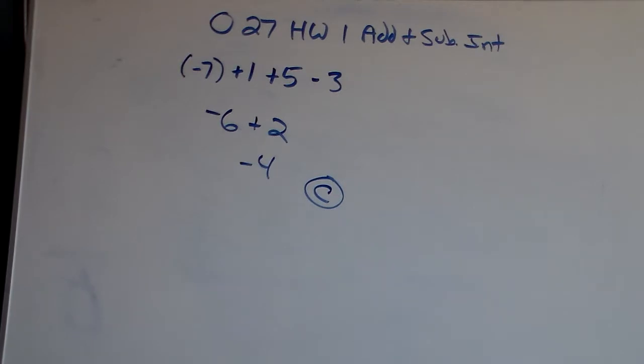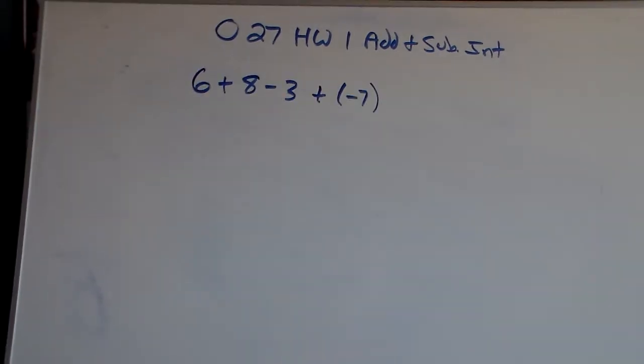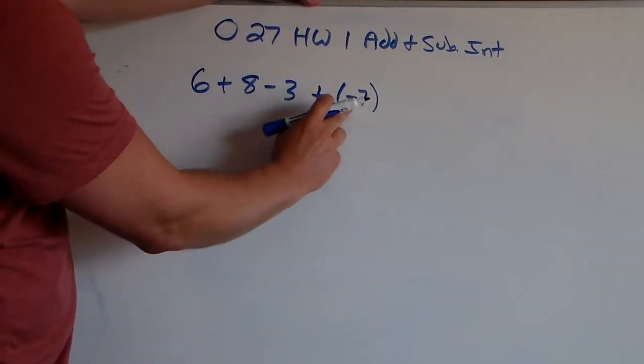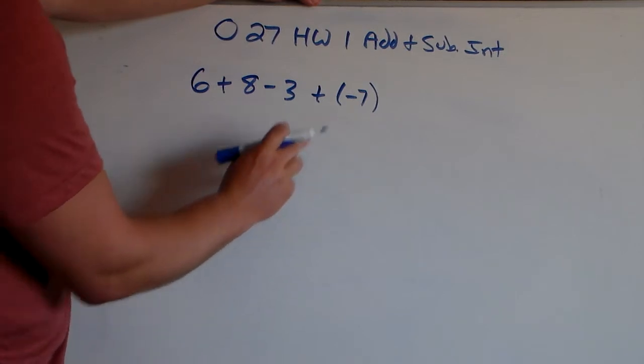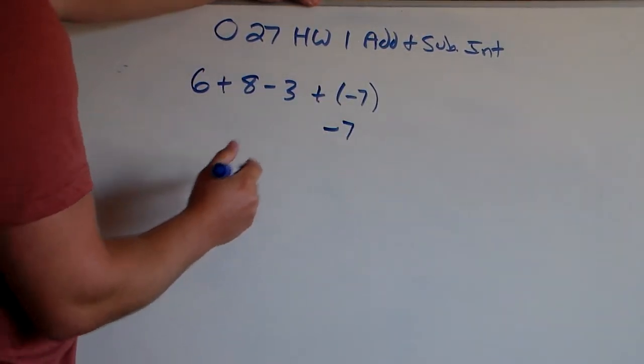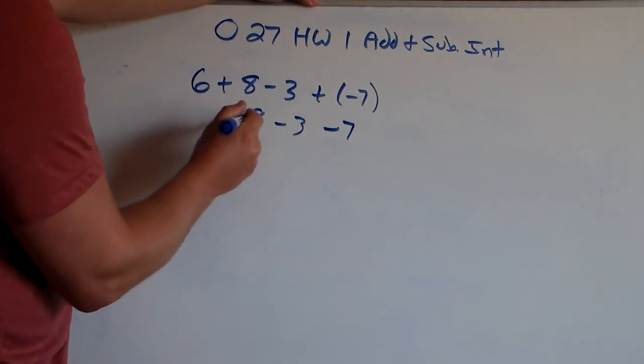The next problem we're going to do is problem number 3. We have to make sure we're very careful with our signs. That's the whole practice here that we want to focus on, adding and subtracting integers, being very careful with our signs. So, in this case we have positives and negatives. We have one positive here and a negative here that are back to back. So, positive and negative, when back to back, is really just a negative. Let's carry everything else down.